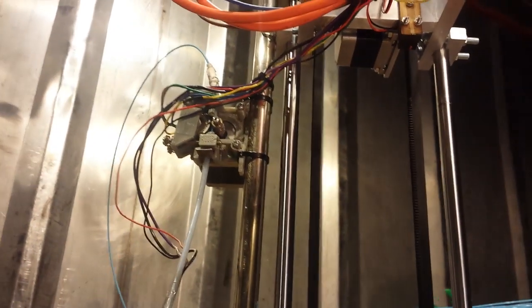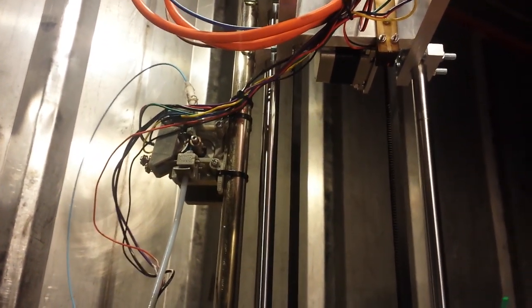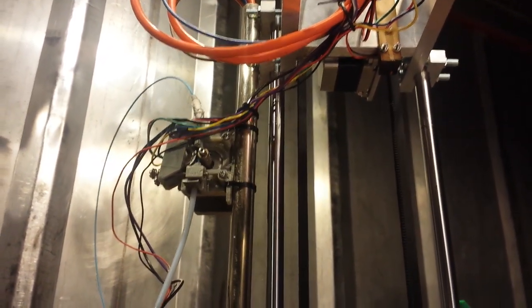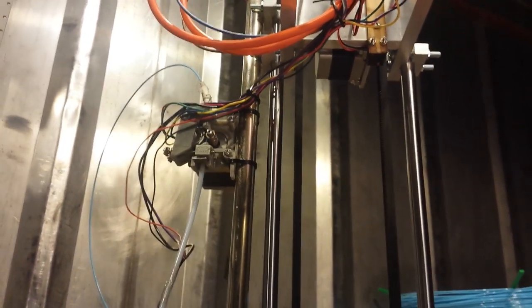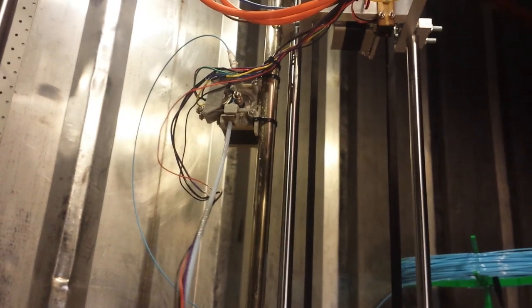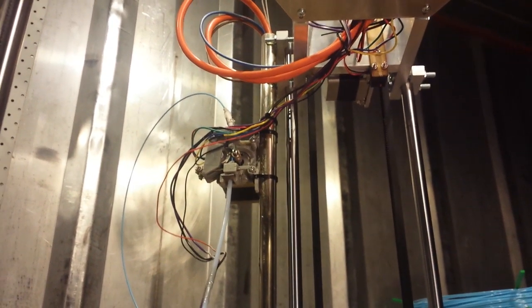The extruder is just an old extruder that I was running on another machine. I just pulled it off and whacked it straight on here for the purpose of getting up and printing as fast as possible, but I would like to make an aluminum extruder to replace that. But that's not really important at this stage.